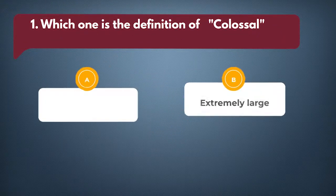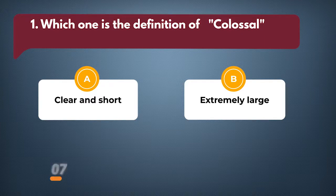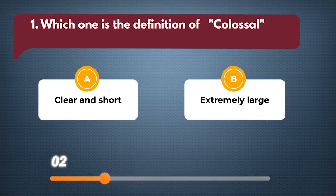Which one is the definition of colossal? A: Clear and short. B: Extremely large. The answer is B: Extremely large.